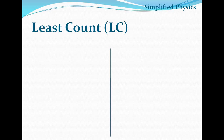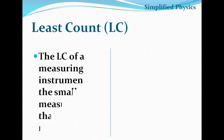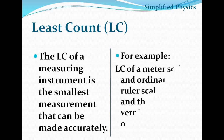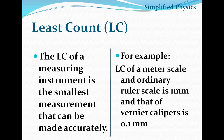The least count of an instrument is simply the smallest measurement that can be done accurately by that device. For example, a meter scale has a least count of one millimeter, meaning it can measure a least value of one millimeter or 0.1 centimeter. Similarly, Vernier calipers have a least count of 0.1 millimeter.